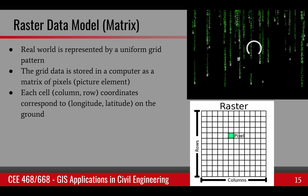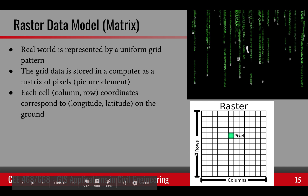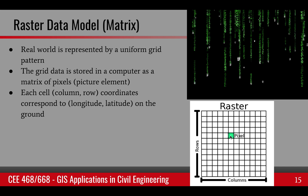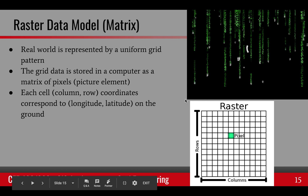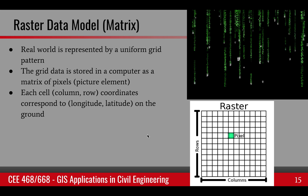It reminds me of the movie Matrix, where the world is in a virtual setup — the whole world is in a computer, called the matrix. In this data model we are also using a matrix to represent the real world. A matrix has rows and columns, and each pixel has a value that represents some characteristic of the surface on the ground. Each cell has its row and column value, but it corresponds to a longitude and latitude on the surface.